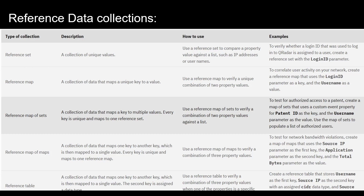The reference data collections are stored in our QRadar console but are also regularly copied to our managed host for best performance on data lookups. The managed host caches the most frequently used reference data values. We can use reference data collections to integrate IOCs from third-party vendors into QRadar, or use business data or log sources coming into our organization to populate data into reference data collections.